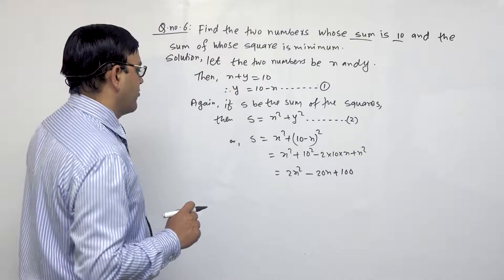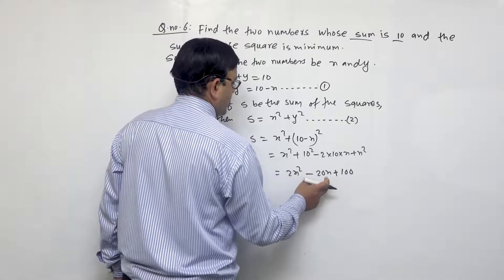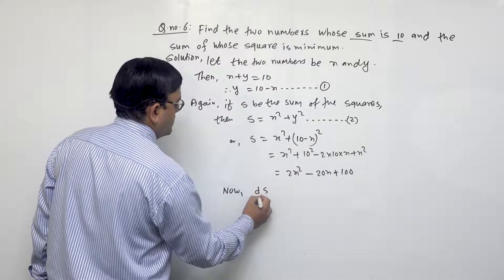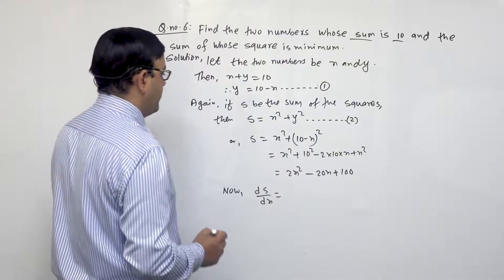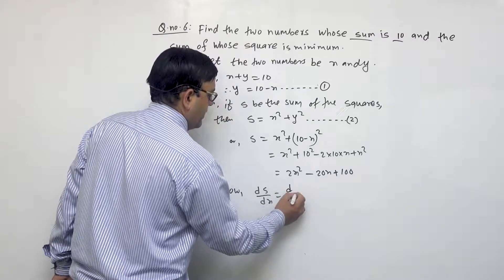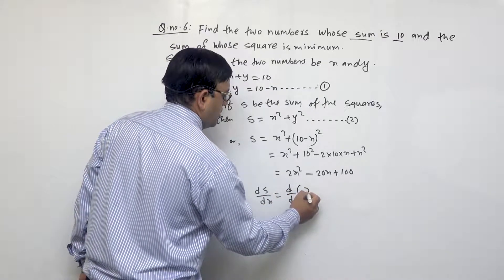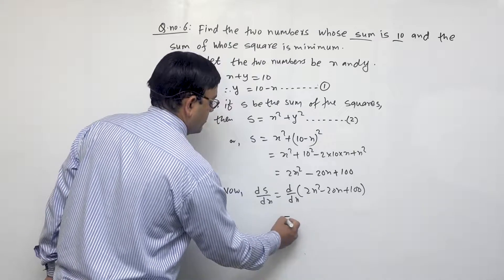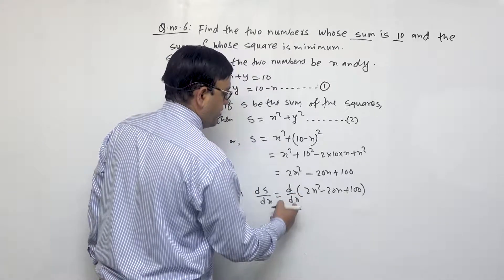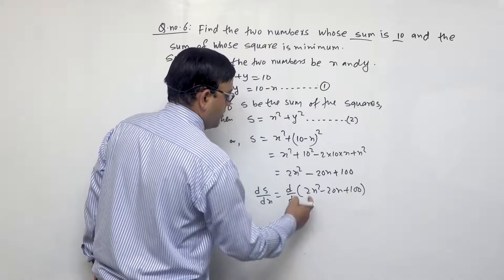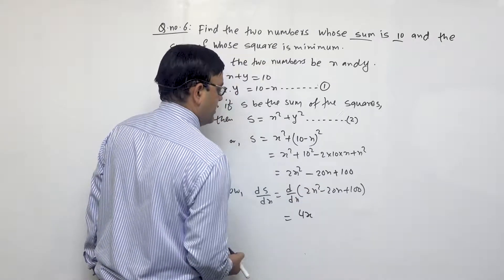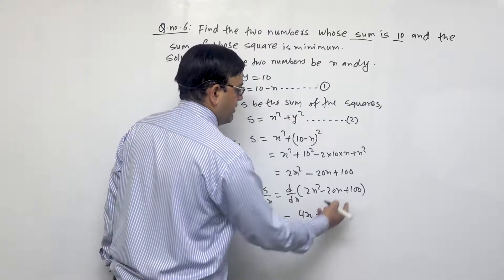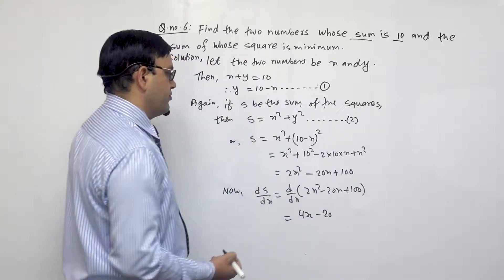Substituting y = 10 - x into S: S = x² + (10 - x)² = x² + 100 - 20x + x² = 2x² - 20x + 100.